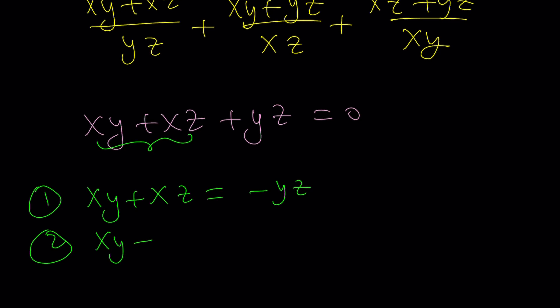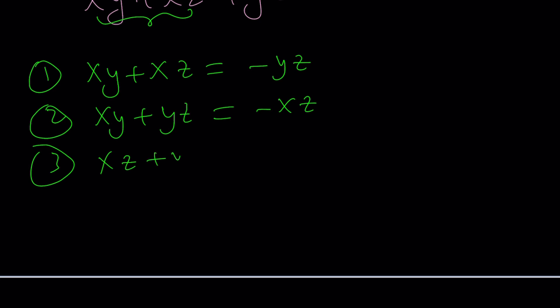Second, if you isolate xy plus yz, that'll be negative xz. And third, if you isolate xz plus yz, then you'll get negative xy.